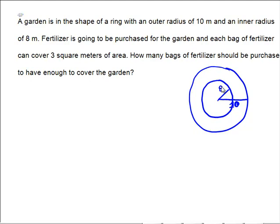The fertilizer is going to be purchased for the garden, and each bag of fertilizer can cover 3 square meters of area. How many bags of fertilizer should be purchased to have enough to cover the garden? So the garden is this region right here, which would be the difference between two circles.